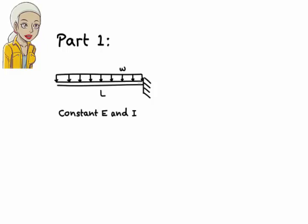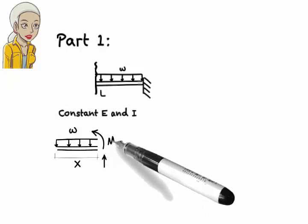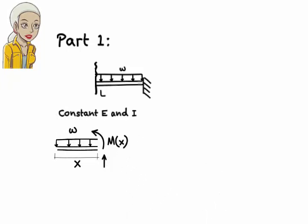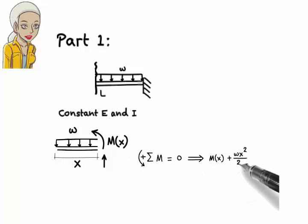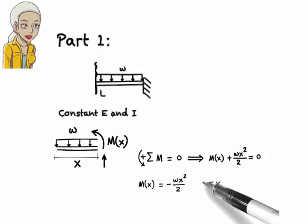To come up with the necessary moment equation, I'm going to cut the beam like this. Then, I draw the free body diagram for the left segment. Finally, I sum the moments about the cut point to get my equation. The moment equation is M(x) equals negative wx squared over 2. Note that this equation is valid for the entire beam.